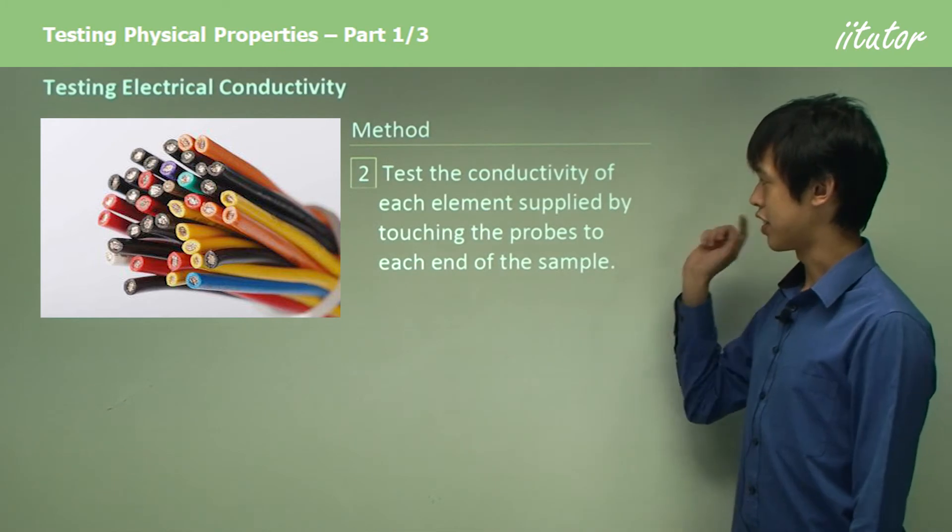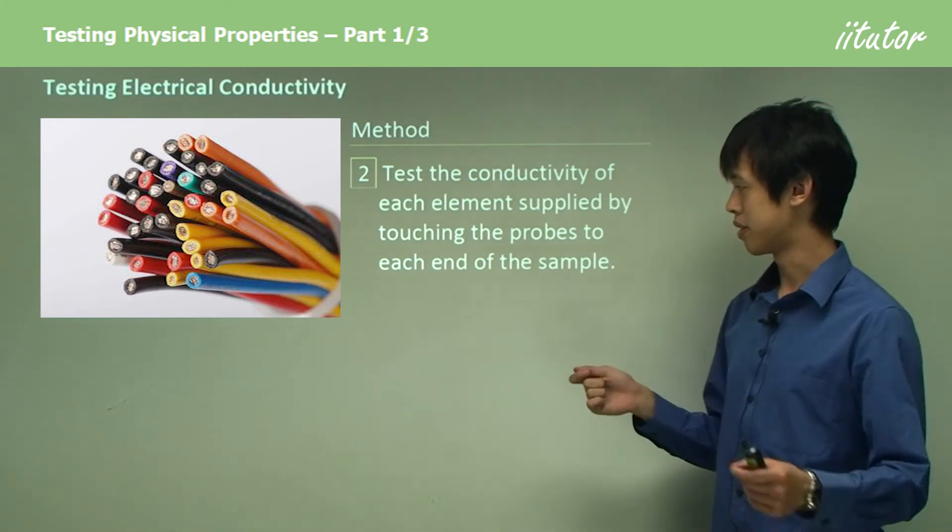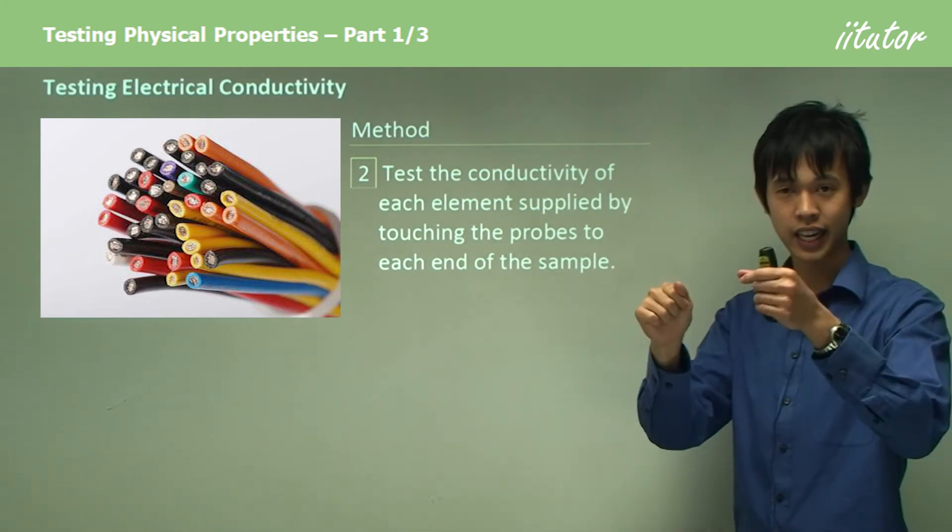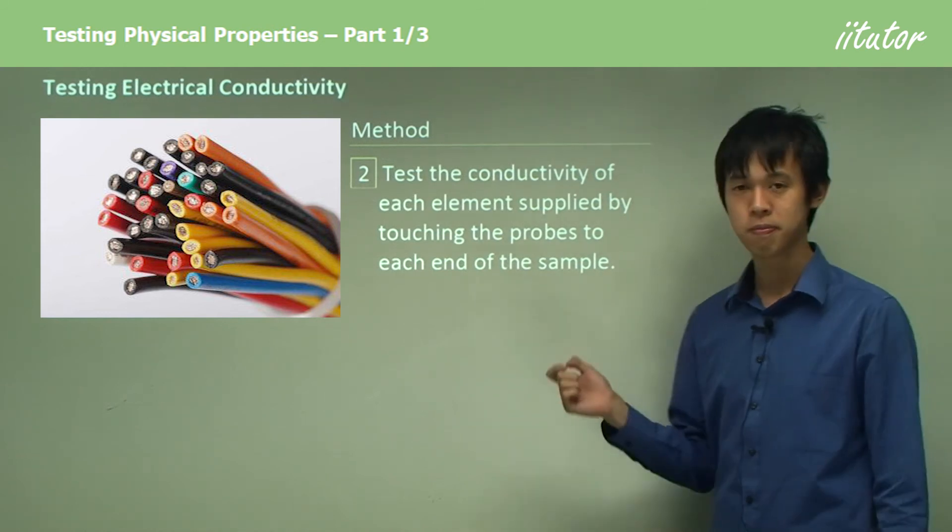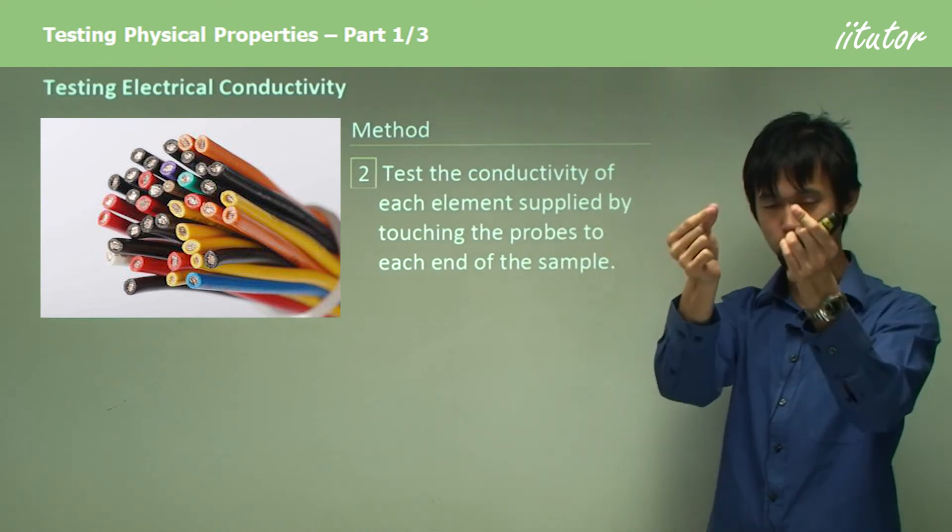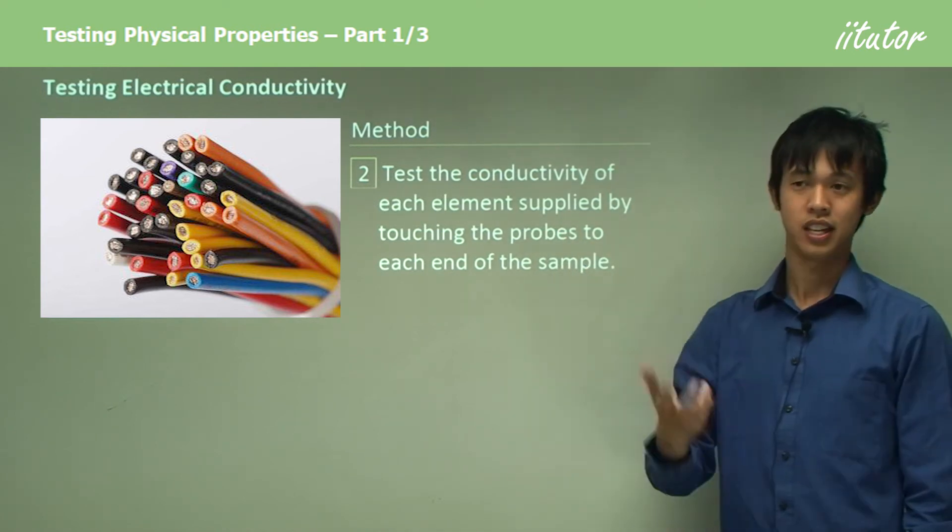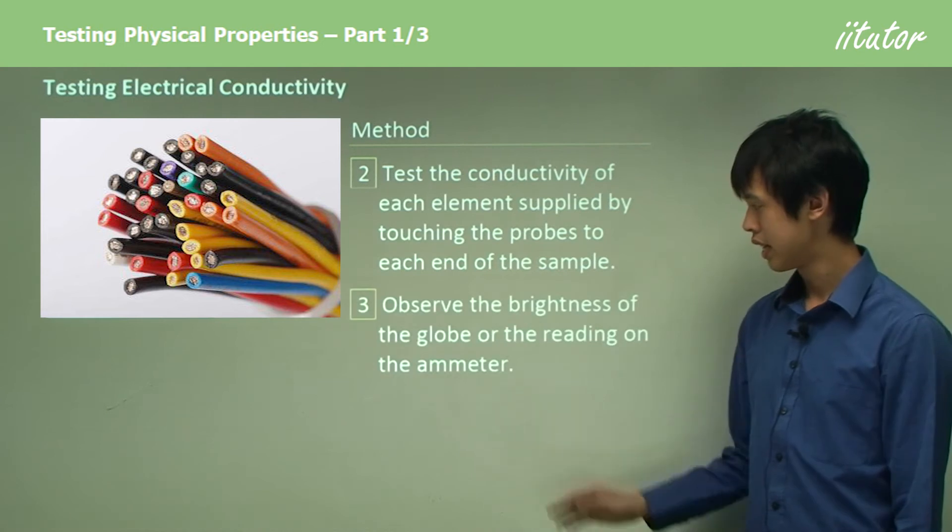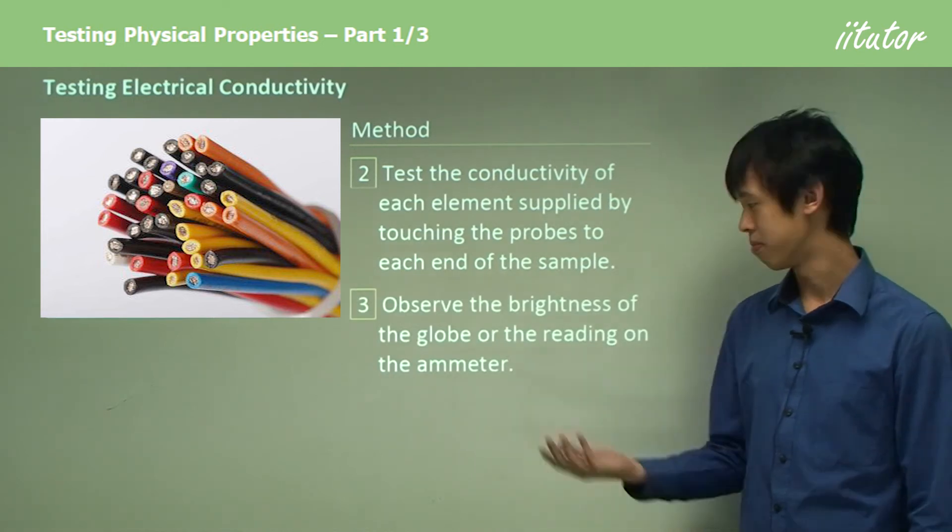Test the conductivity of each element by touching the probes or the alligator clips to each end of the sample. That box will be two wires with alligator clips. You just clip them together onto the sample and that part's sorted.